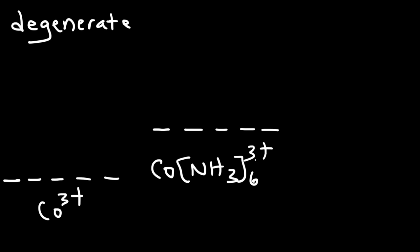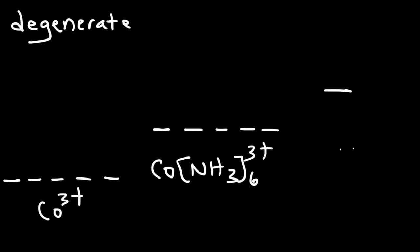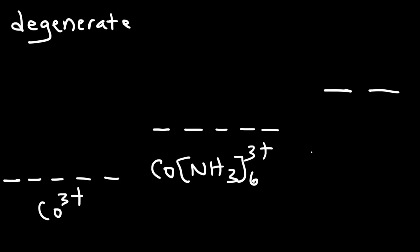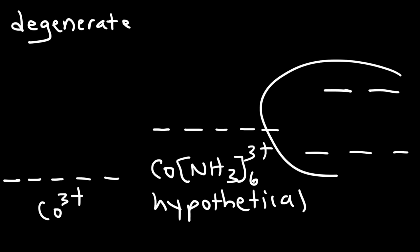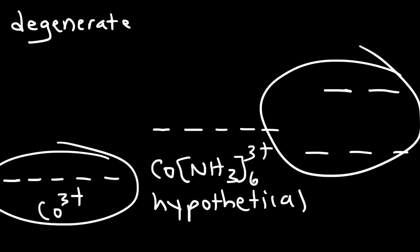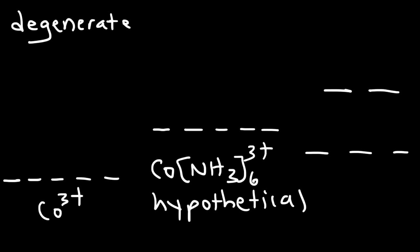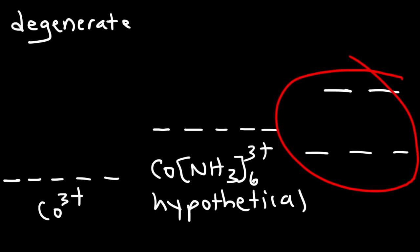In actuality, two of the 5 d orbitals will be higher than this hypothetical crystal field, and three of them will be lower. But it's important to understand that all five are higher than the original 3d orbitals that exist in the free metal ion. For the rest of this video, I'm going to talk about the energy levels of the new d orbitals with respect to those that are part of the hypothetical crystal field model.